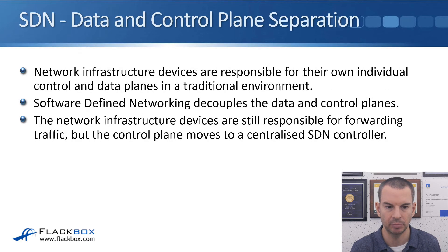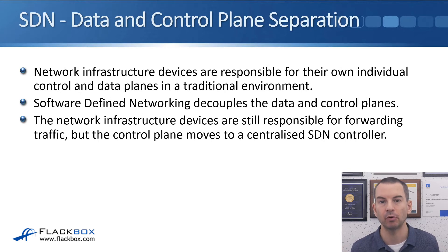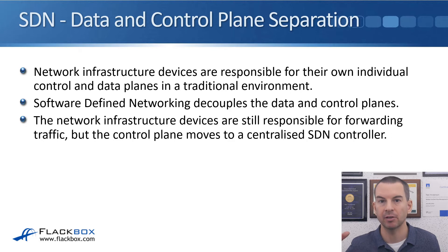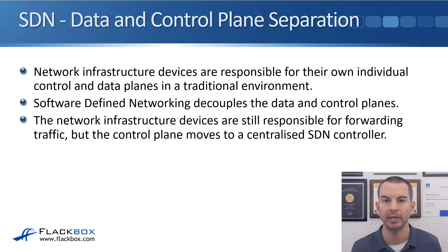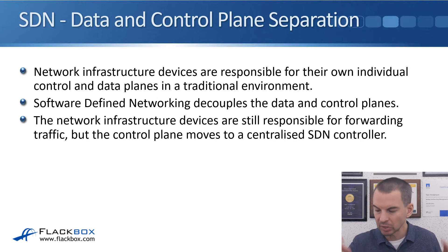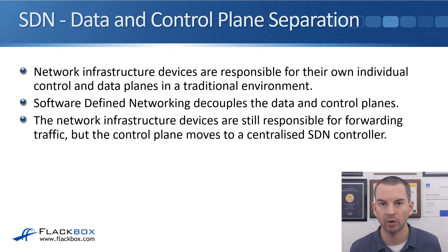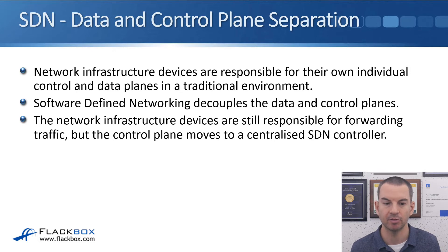Those are our three planes. Network infrastructure devices — your routers and switches — are responsible for their own individual control and data planes in a traditional environment. All the packets passing through a router or switch are forwarded by that device in the data plane. And using OSPF as the example in the control plane, each individual router is responsible for updating its own routing table, which is how it makes those forwarding decisions.